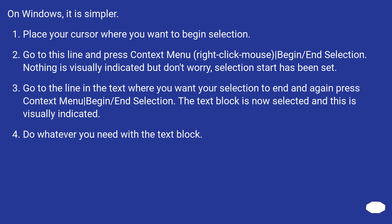On Windows, it is simpler. Place your cursor where you want to begin the selection. Go to that line and press the context menu, then right-click: vertical bar, begin/end selection. Nothing is visually indicated but don't worry — the selection start has been set.